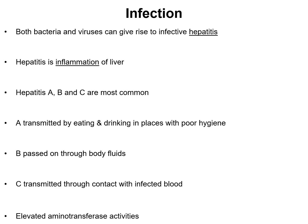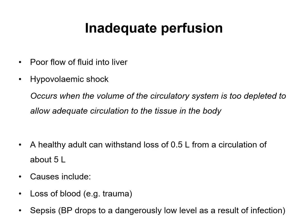Both bacteria and viruses can give rise to infective hepatitis, which is defined as inflammation of the liver. The three most common types are hepatitis A, B, and C. Hepatitis A is transmitted by eating and drinking in places of poor hygiene; hepatitis B is passed on through bodily fluids; and hepatitis C is through contact with infected blood. These conditions result in elevated aminotransferase activity, so your AST and ALT levels will be increased.